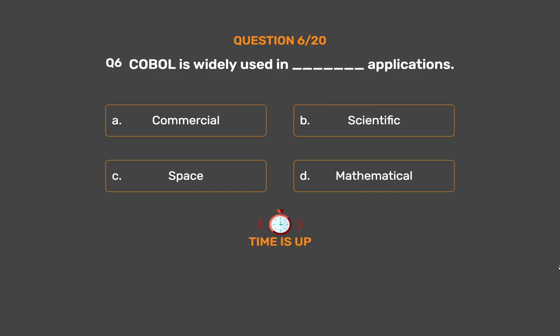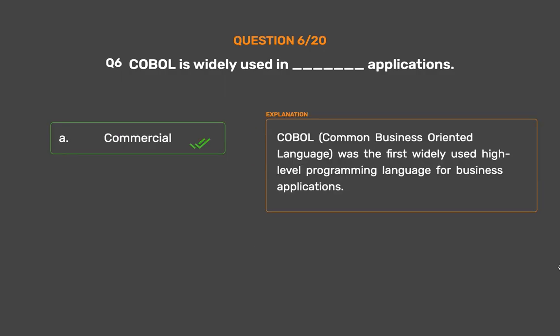The correct answer is Option A: Commercial. COBOL, Common Business-Oriented Language, was the first widely used high-level programming language for business applications.